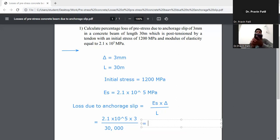This works out to 0.1 × 10^5 × 3 divided by 30,000, so it will be 21 MPa.